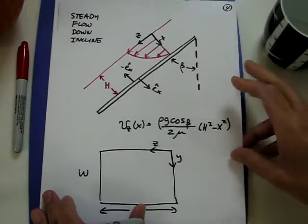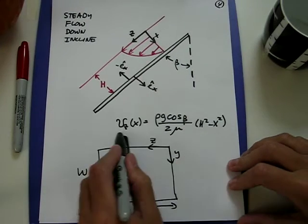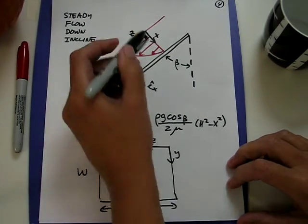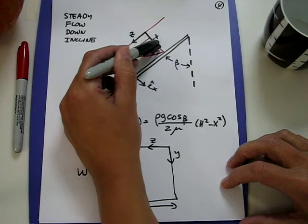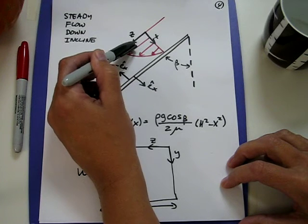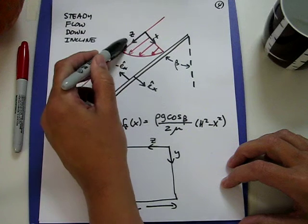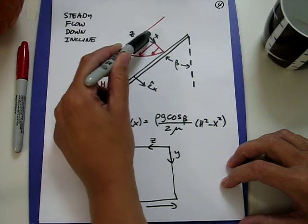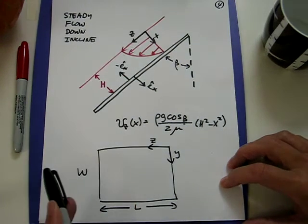So for the flow down an incline plane problem, this is the solution. We already have solved for the velocity field, and we have chosen as a coordinate system the x-z coordinate system with y as the neutral direction. The z is the flow direction, and x is the direction in which the flow changes.